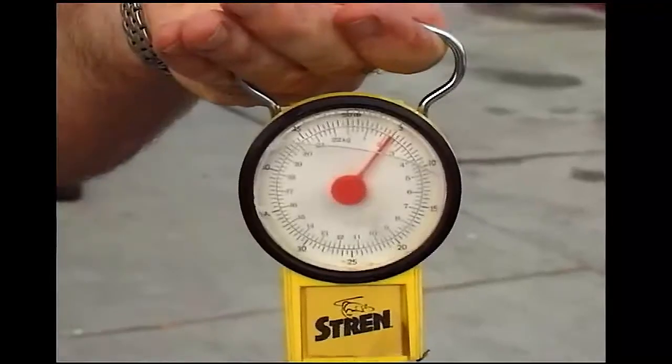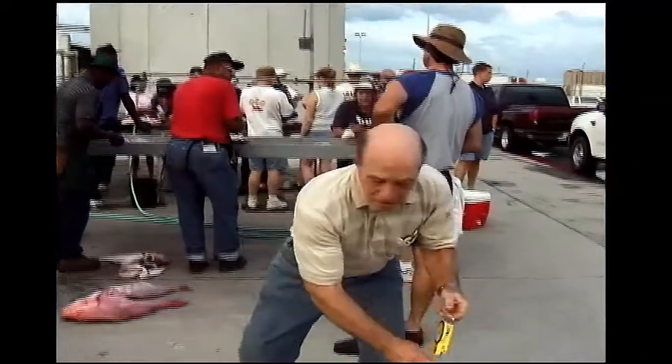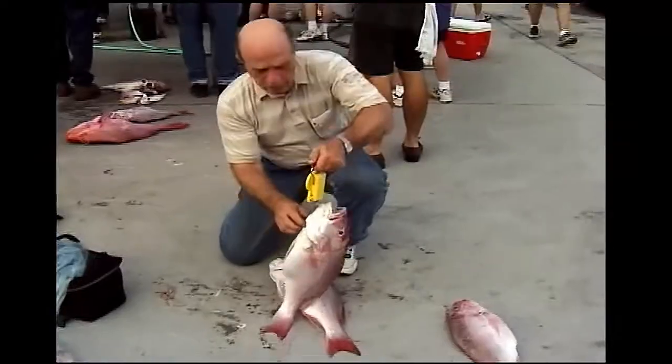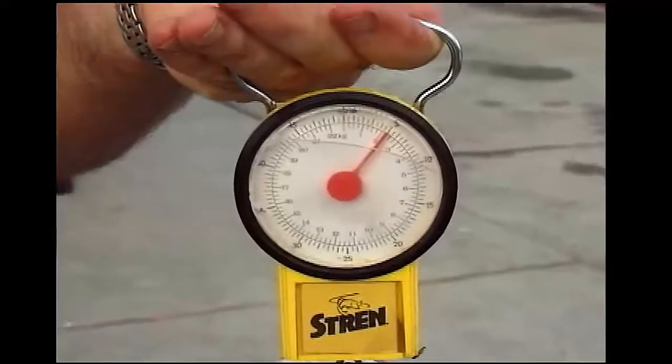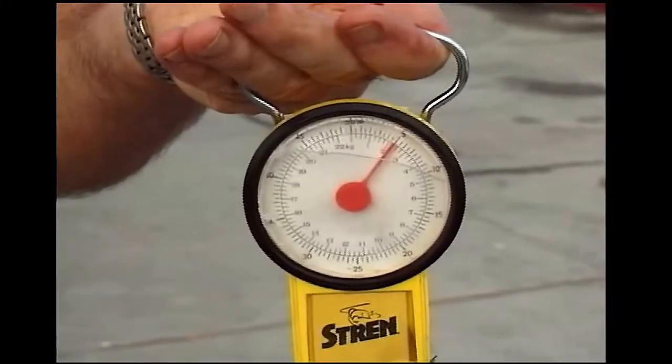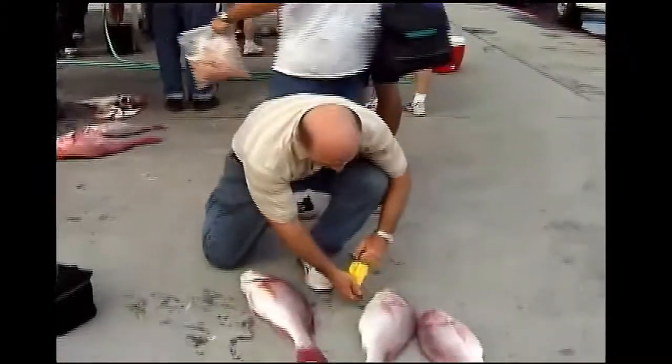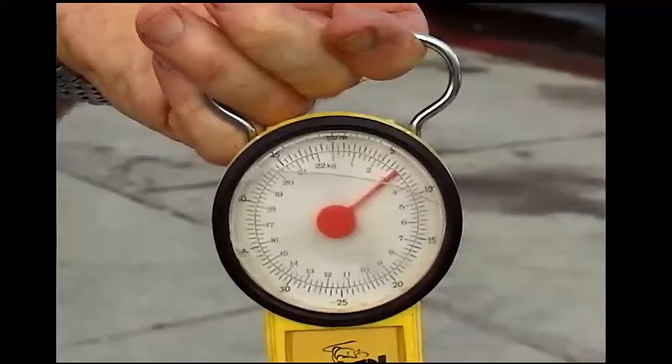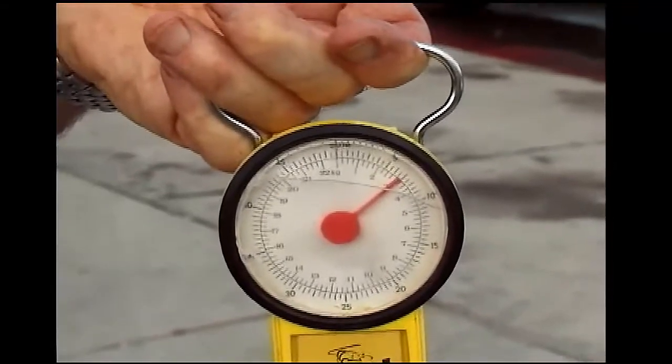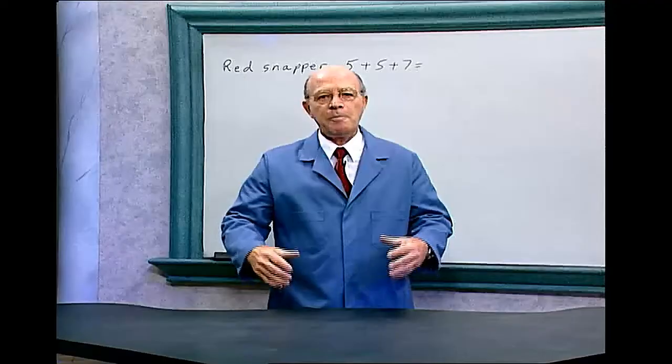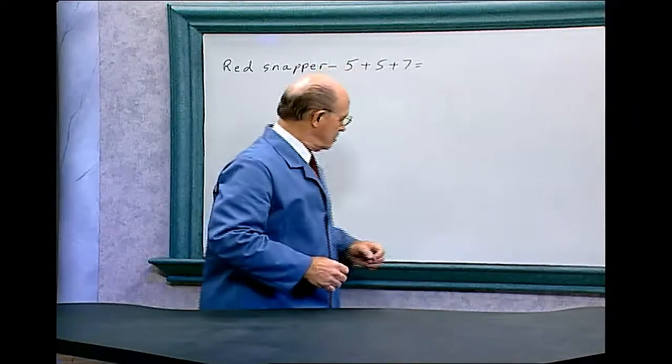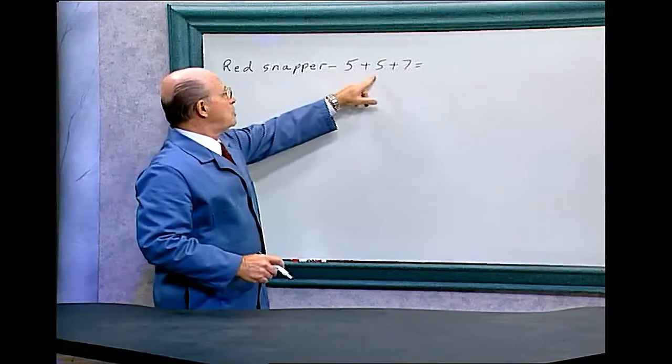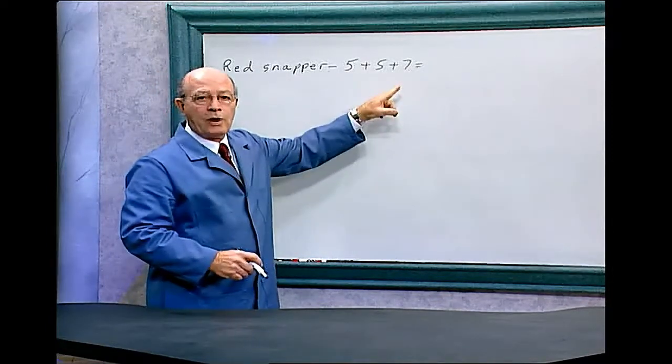One weighed five pounds. Another one also weighed five pounds. And the third one weighed seven pounds. So how many pounds did the three fish weigh all together? The one red snapper weighed five pounds. Another one was five pounds. And the other one weighed seven pounds.